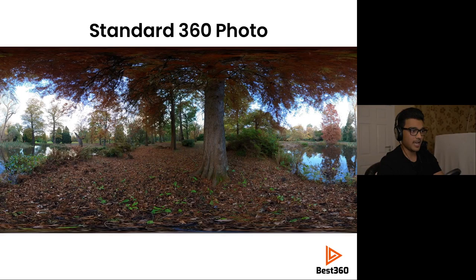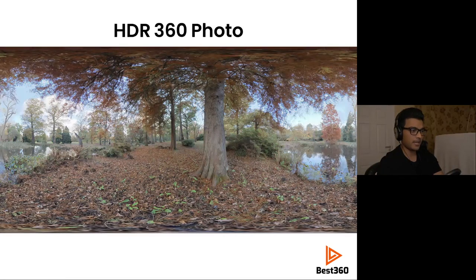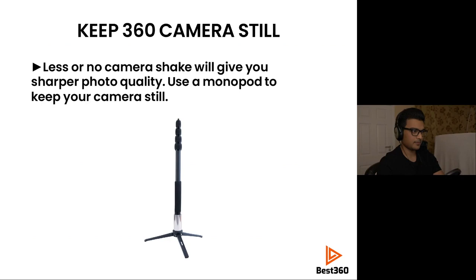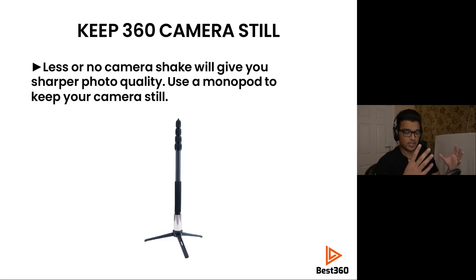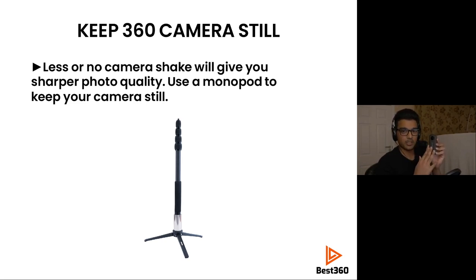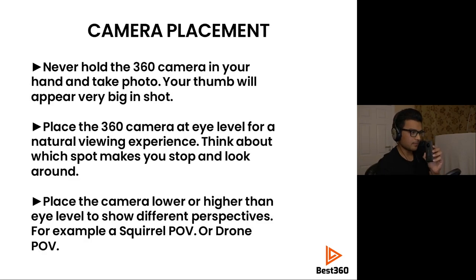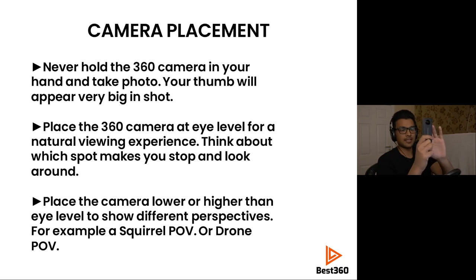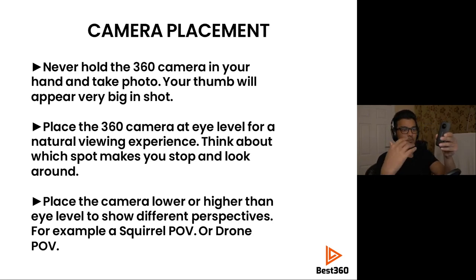In comparison, a standard photo shows the sky blown out, while the HDR photo has detail in the sky and all the branches and leaves. Another thing to ensure is that your camera has little or no shake whatsoever — it's best to put your 360 camera on a monopod, especially in low light. This will get rid of any shake or blur and give you the sharpest photo quality possible. Never hold the 360 camera in your hand to take a photo because your hand is way too close to the lens and will appear really big at the bottom.